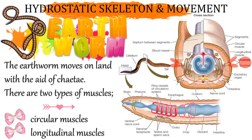Now for the hydrostatic skeleton and its movement. Have you ever seen an earthworm move on the ground? Sometimes the segments on its body become long while other segments become short. The earthworm has a hydrostatic skeleton, meaning its body cavity is filled with fluid. It moves on land with the help of chaetae — the bristles found at the sides of its body. There are two types of muscles on the walls of the earthworm's body: circular muscles and longitudinal muscles.